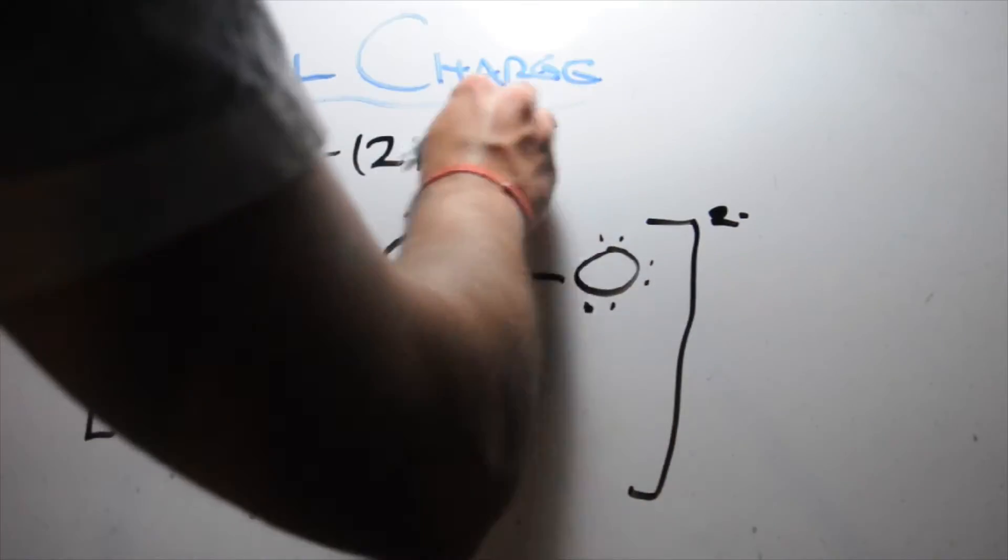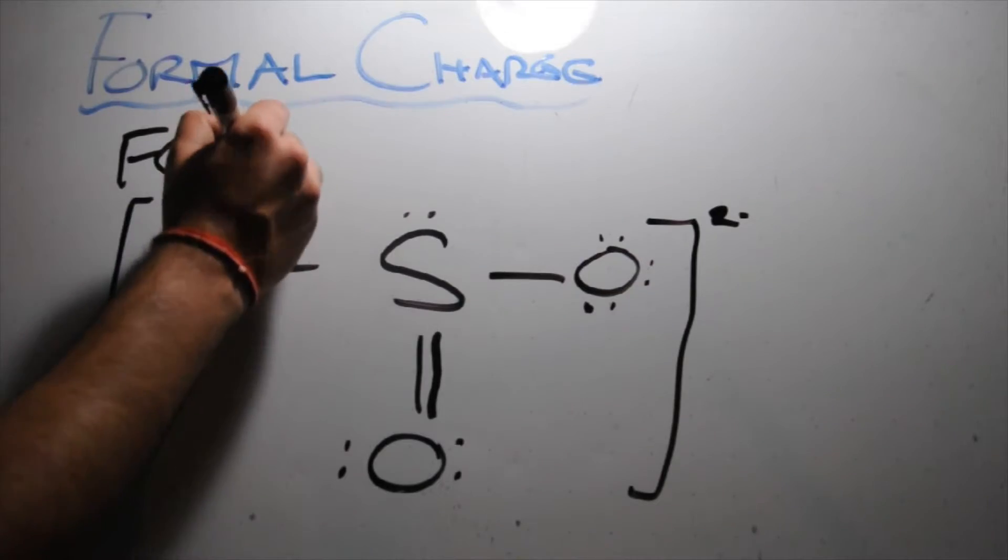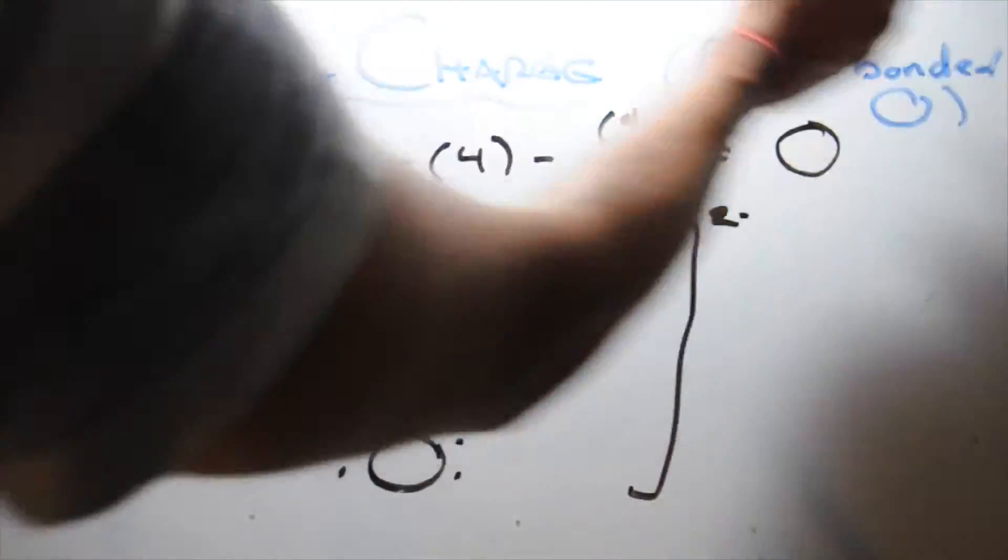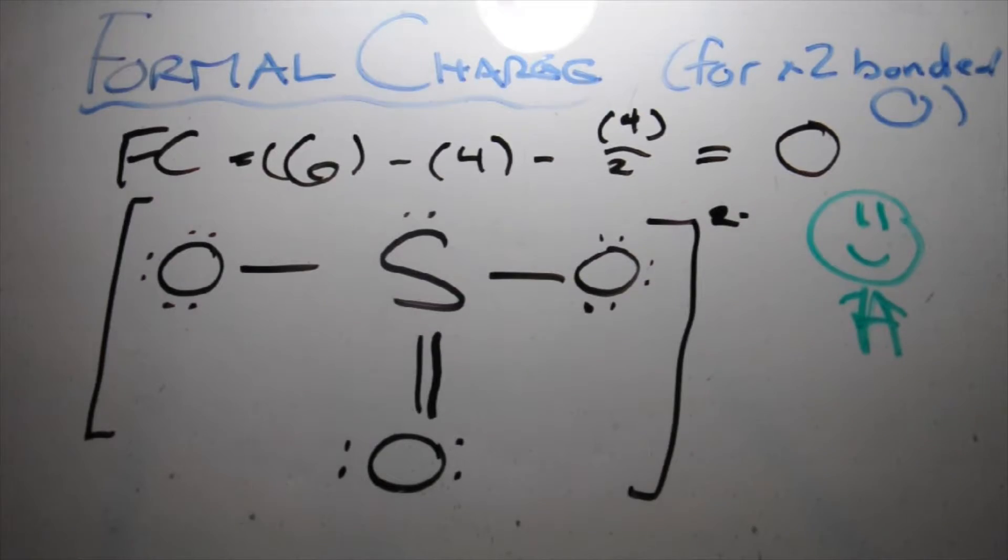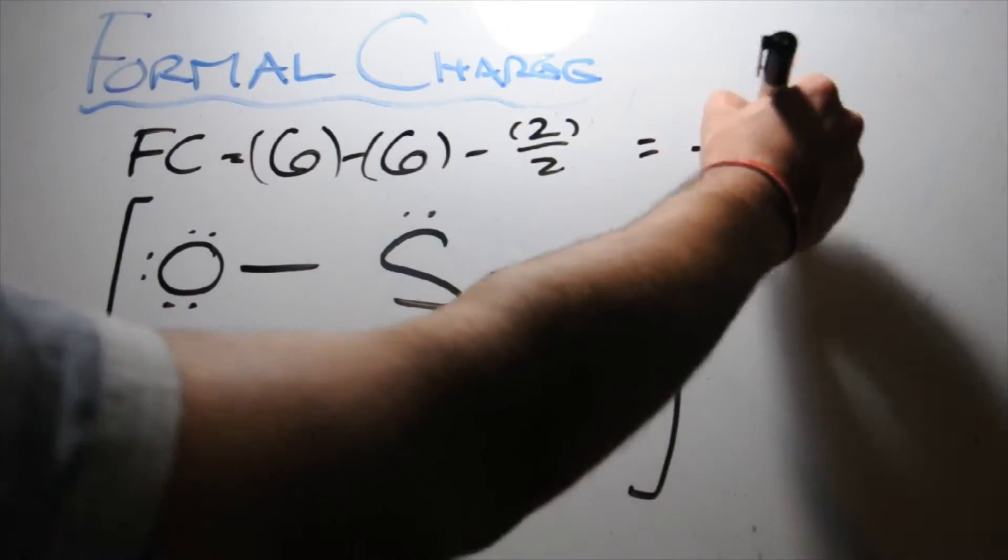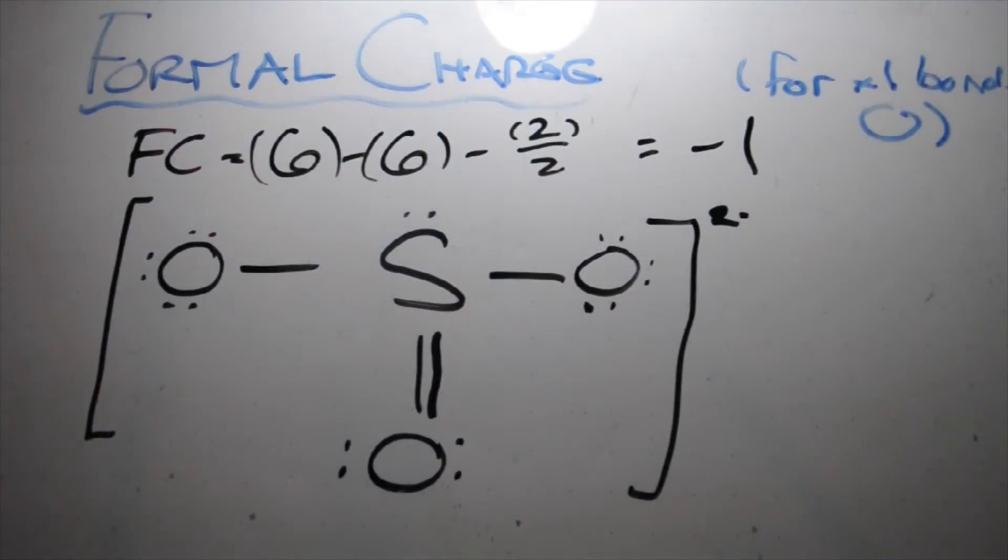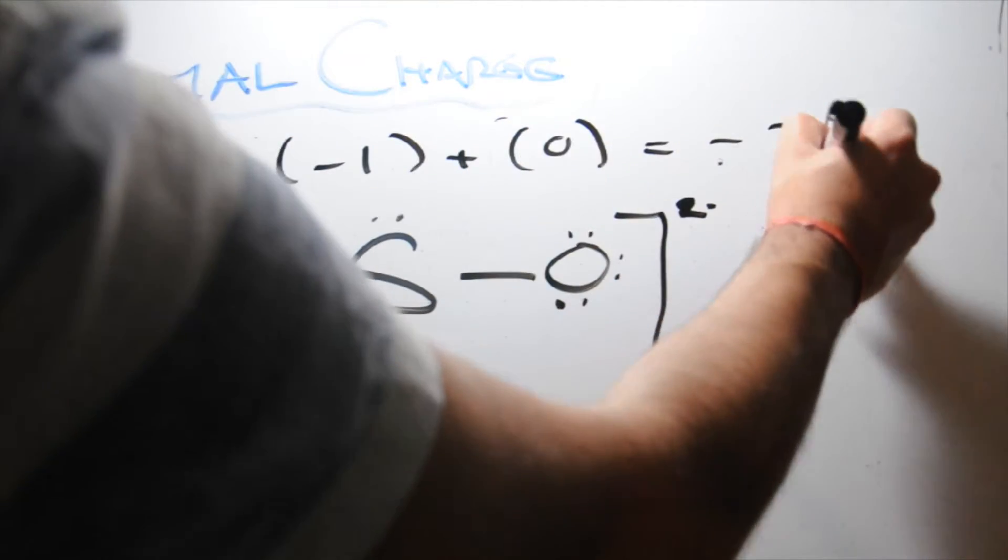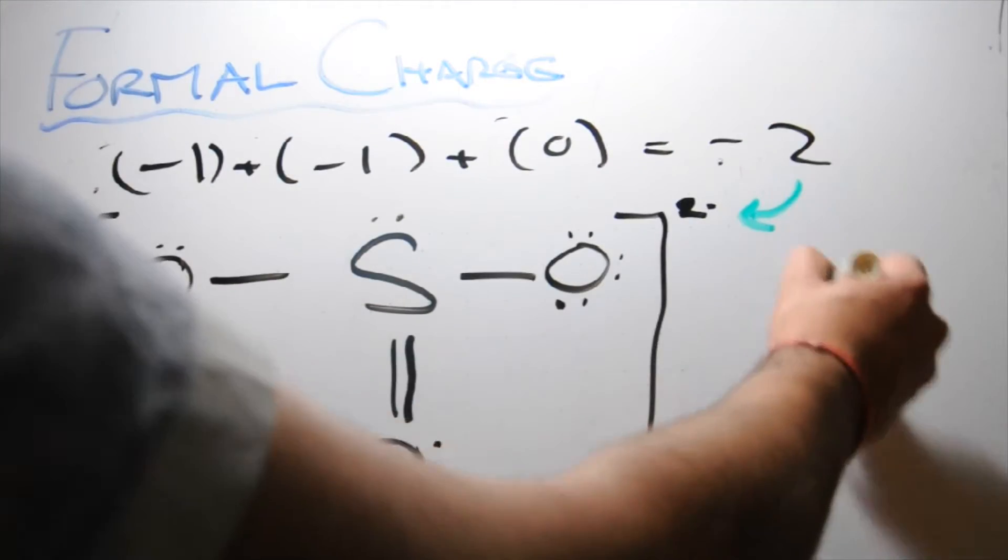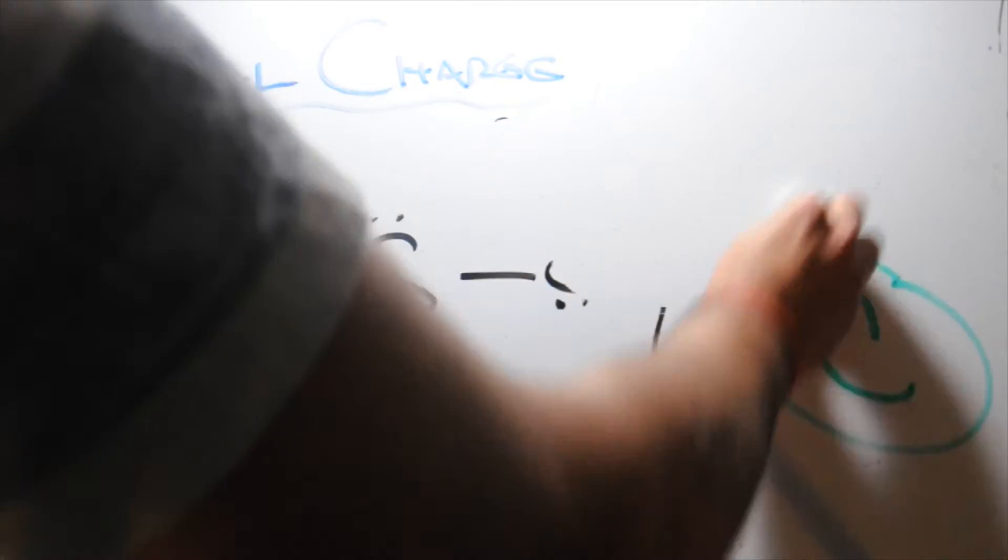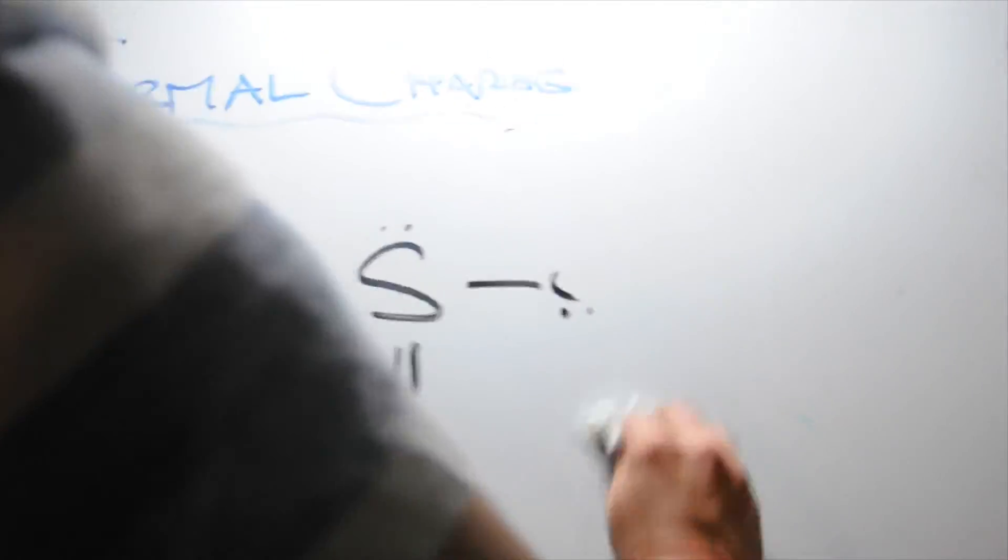Now the formal charge of sulfur is zero. Now we can take a look at the formal charges of oxygen. The double bonded oxygen also has a formal charge of zero. Six minus four minus four over two gives us zero. But if we take a look at the oxygens that aren't double bonded, the formal charges are actually negative one. Six minus six minus two over two, which is one. And there's actually no problem with this Lewis structure because the ion SO3 2- has a charge of two minus. If you added all the formal charges of sulfur and the three oxygens, you would get negative two. The formal charge of all the atoms added together needs to be the same as the charge of an ion. Or if it's a molecule, it needs to equal zero.